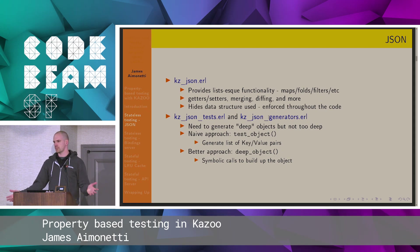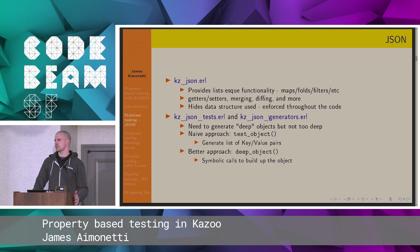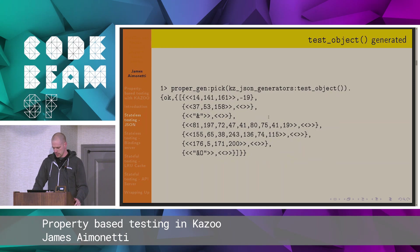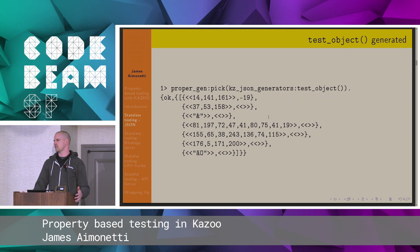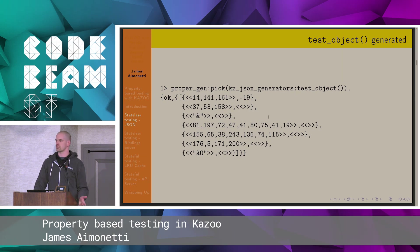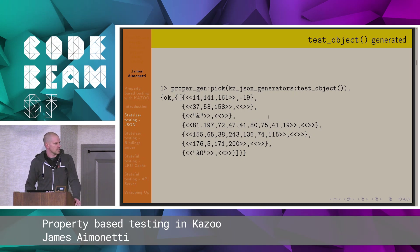We wrote a ton of unit tests, as one is wont to do when something is used heavily in a project. But we weren't sure that we were properly exercising the code, so we wrote some property tests. The first iteration was a naive approach — just generate some keys and values, where the values might be JSON objects themselves. But we didn't really have any control over the depth of the objects, and so we didn't know how well we were actually testing things.